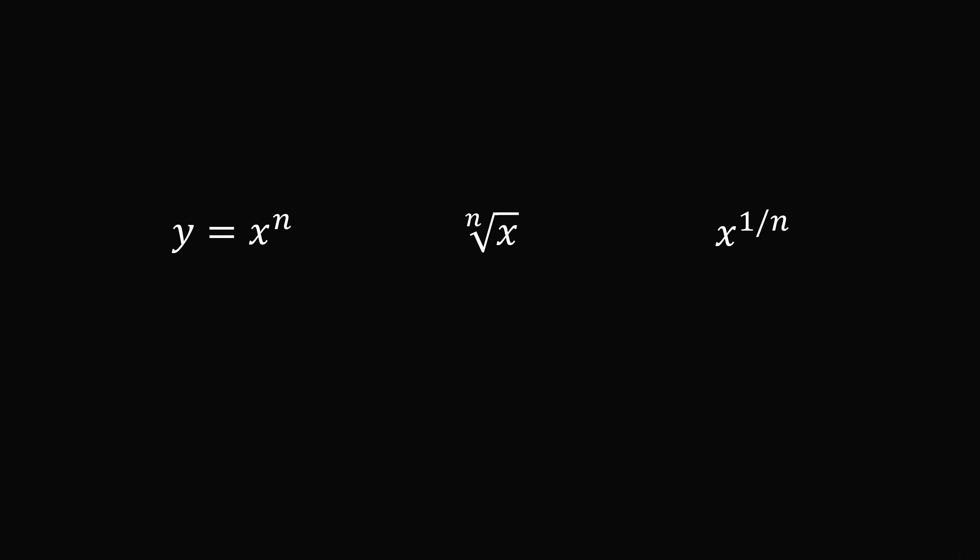Now, what if instead we consider x is less than 0? y is equal to x to the power of n will still have n solutions. But what can we say about the nth root of x and x to the power of 1 over n? In order to understand that, we have to get complex.